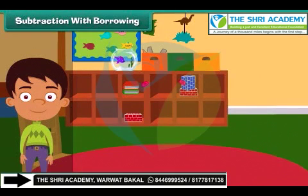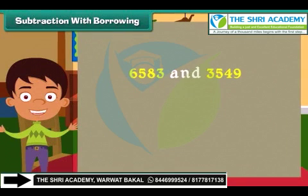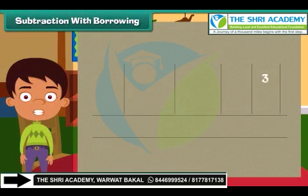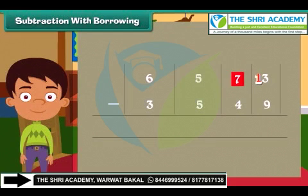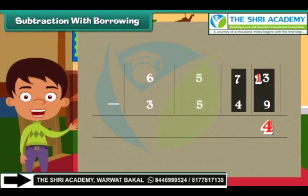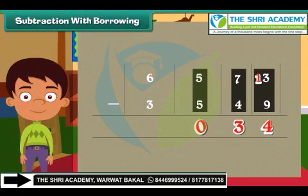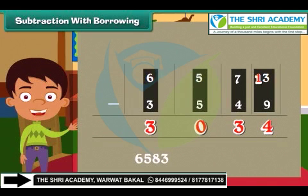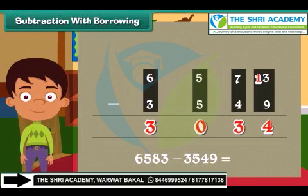Subtraction with borrowing. It's time to learn subtraction involving borrowing. Subtract 3549 from 6583. We again start from the ones column. Since 3 is smaller than 9, we will borrow 1 ten from 8. Therefore, 3 will become 13 and 8 will become 7. Subtract 9 from 13 and we get 4. Subtract the tens: 7 minus 4 is 3. Similarly, subtract hundreds: 5 minus 5 is 0. Subtract thousands: 6 minus 3 is equal to 3. So 6583 minus 3549 is equal to 3034.